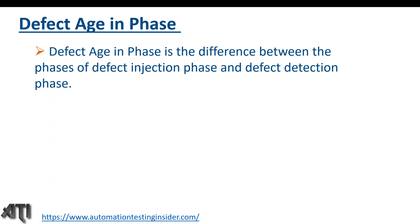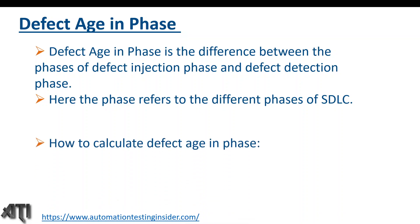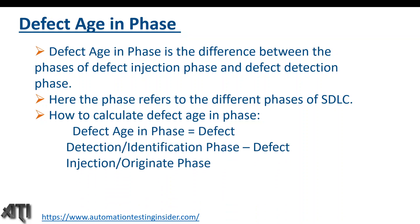Defect age in phases is the difference between the phase of defect injection and the phase of defect detection, where the phases refer to the different phases of the SDLC. The formula is: Defect Age in Phases = Defect Detection/Identification Phase minus Defect Injection/Origination Phase.